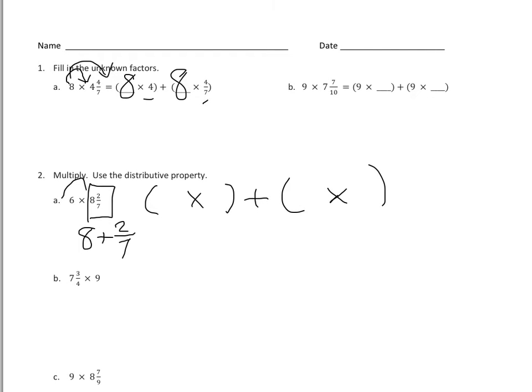Students then want to remember to distribute the 6 to both parts. So here we know that the first part is 8, the second part is 2 sevenths, and they're going to distribute the 6. In this case, students would solve these. So when students solve, they're going to want to solve each parentheses under.